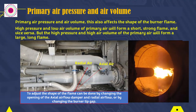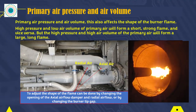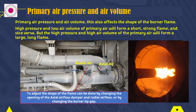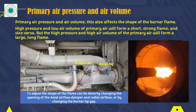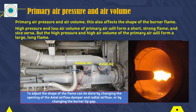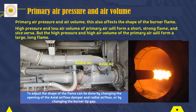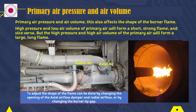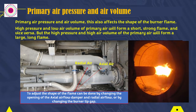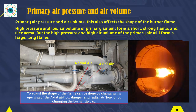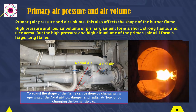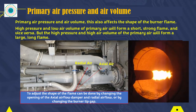Air pressure and primary air volume also affect the shape of the burner flame. High pressure and low volume of primary air will form a short, strong flame, and vice versa. But high air pressure and high air volume of the primary air will form a large and long flame. To adjust the shape of the flame, this can be done by changing the opening of the axial airflow damper and radial airflow, or by changing the burner tip gap.